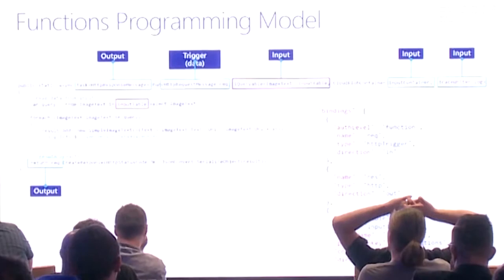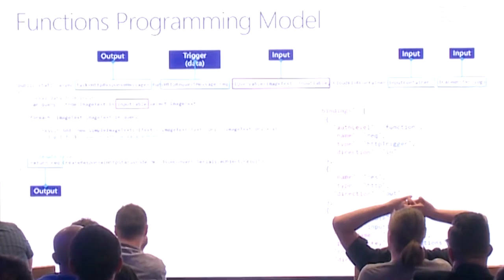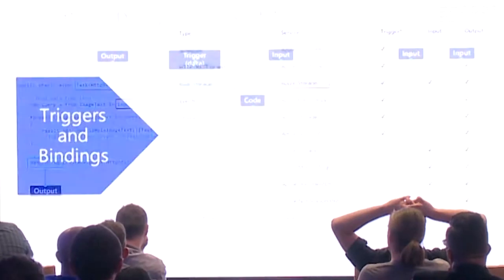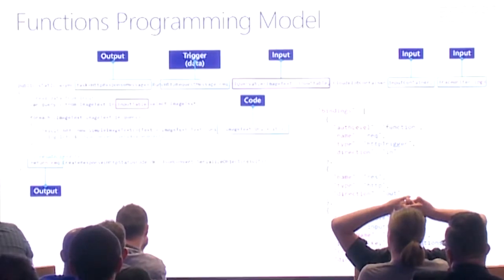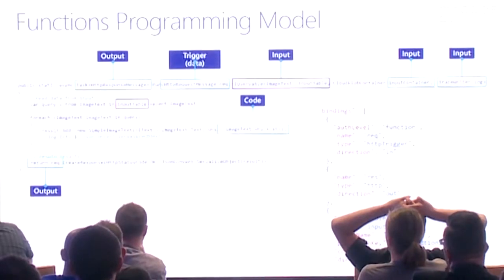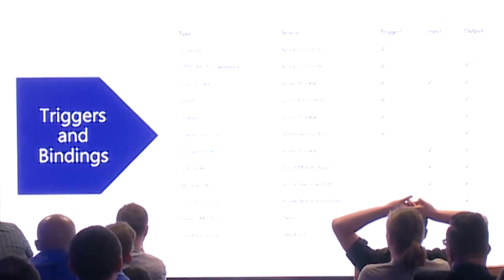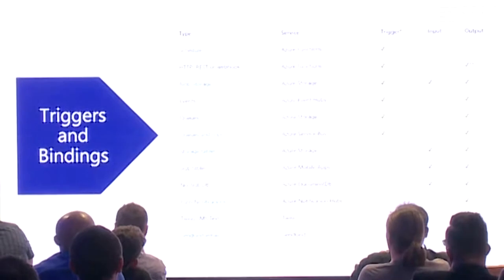Inside the code, I can immediately query: 'var query from imageText and inputTable select imageText.' The model is simple: trigger fires, brings in inputs, you run your code, it goes to outputs. Each function should do something small and quick, then exit and be done.